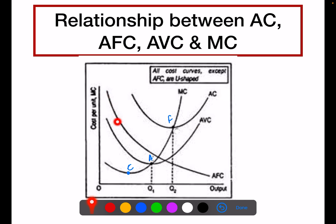The second point is that AFC falls. Why does it fall? Because as production increases, AFC falls, but it never touches either axis — neither the Y-axis nor the X-axis. So AFC always remains positive.